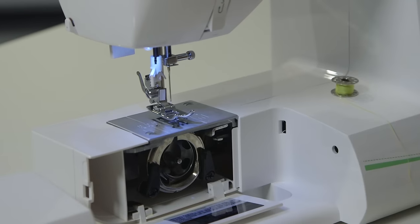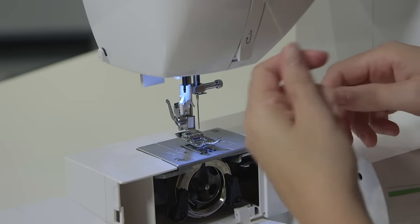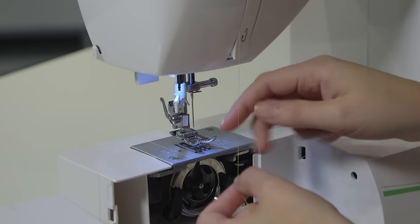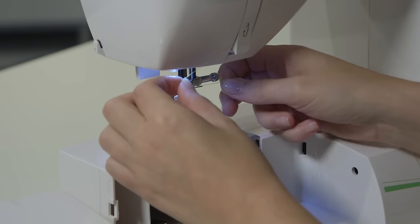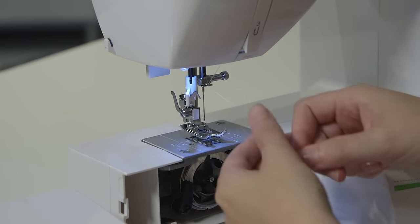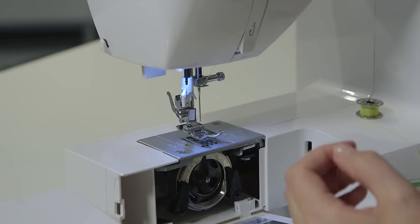The last stop before the needle is this thread guide, which is a horizontal bar right above the needle. The easiest way to get the thread in there is to hold it horizontally and just slip it right on top, and then bring the tail down like that.